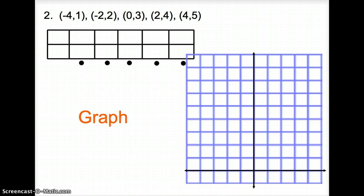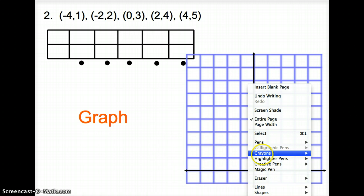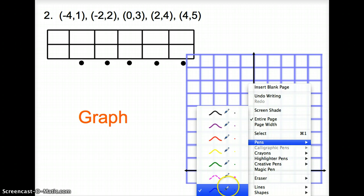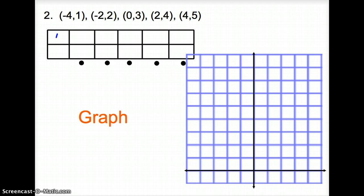Next one. We jump to 2. Again, we're going to put those coordinates in our table, in our x, y table. So it's negative 4 1, negative 2, 2, 0, 3, 2, 4, 4, 5. Go ahead and plot your points.